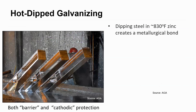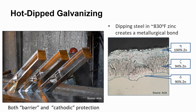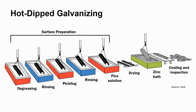Hot dip galvanizing is a metallurgical process. We take a piece of steel and dip it in a hot zinc bath, typically at 830 degrees. The picture on the right shows varying layers of the zinc: 100% zinc on the outside, transitioning to about 90% zinc adjacent to the steel itself. It provides both a barrier protection system and cathodic protection — the cathodic protection comes from the zinc itself, and the barrier keeps water and salt away from the steel. This shows a typical process in a galvanizing shop.